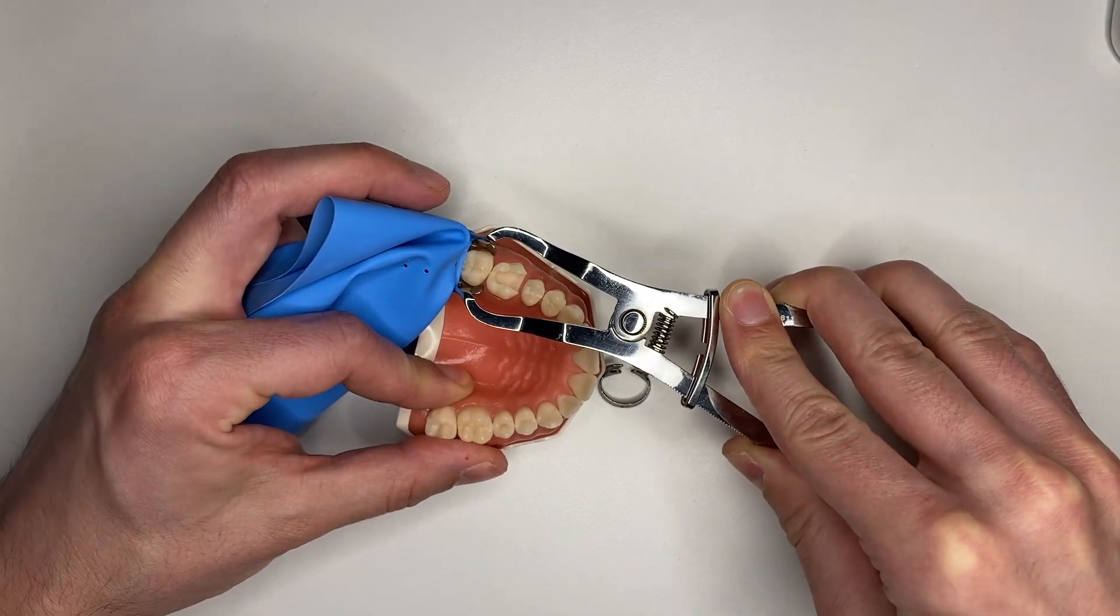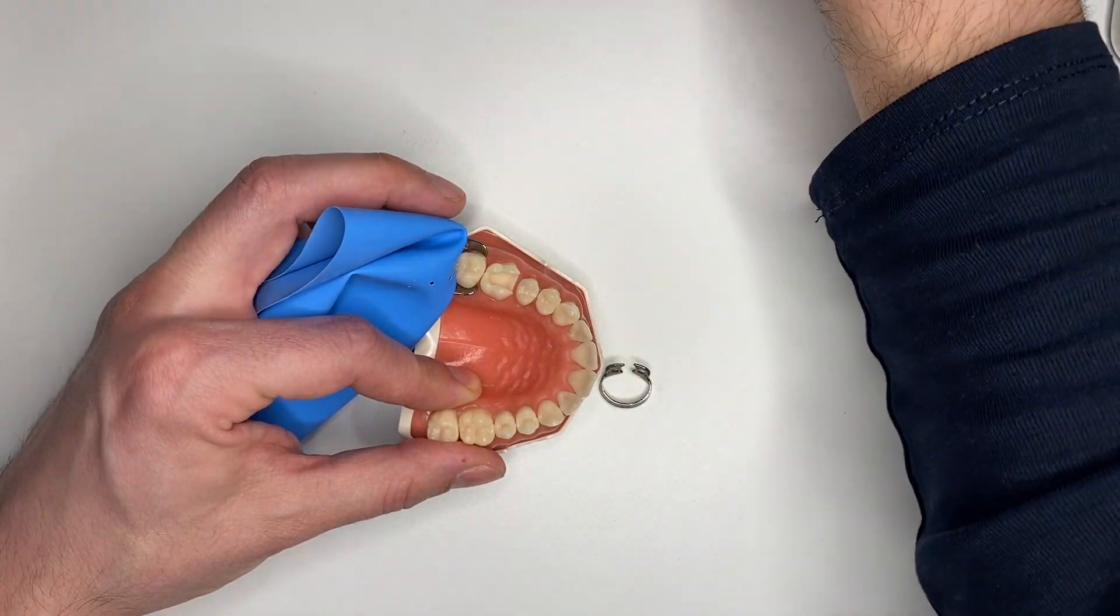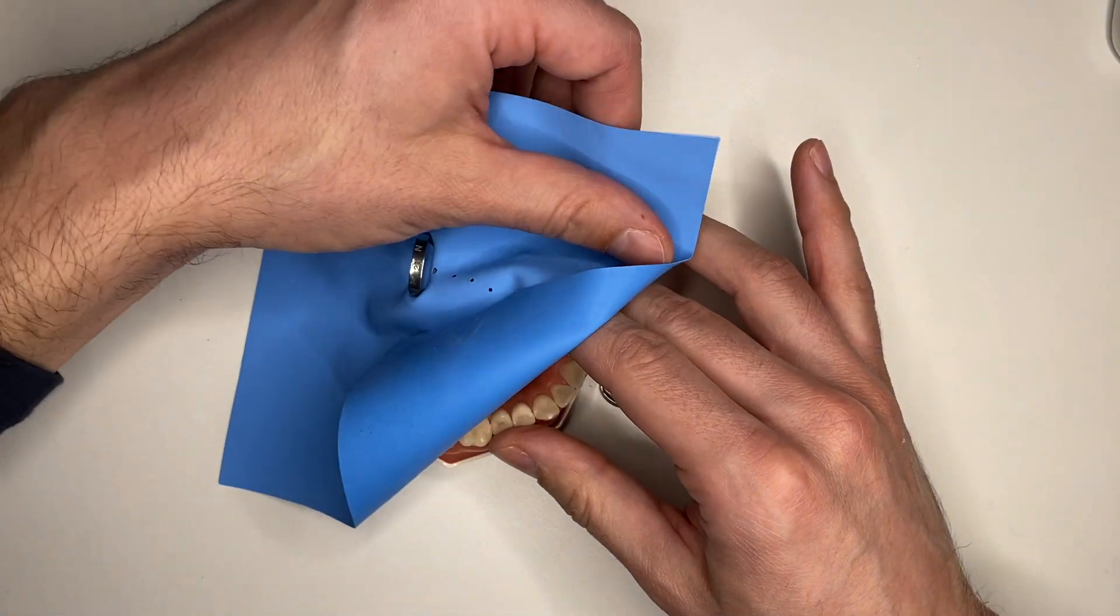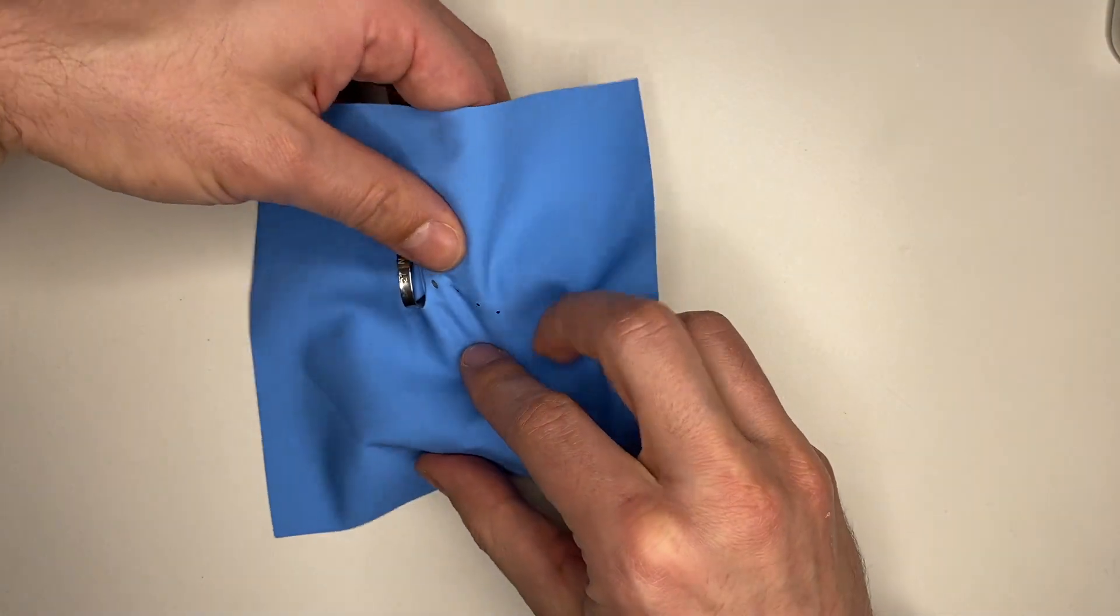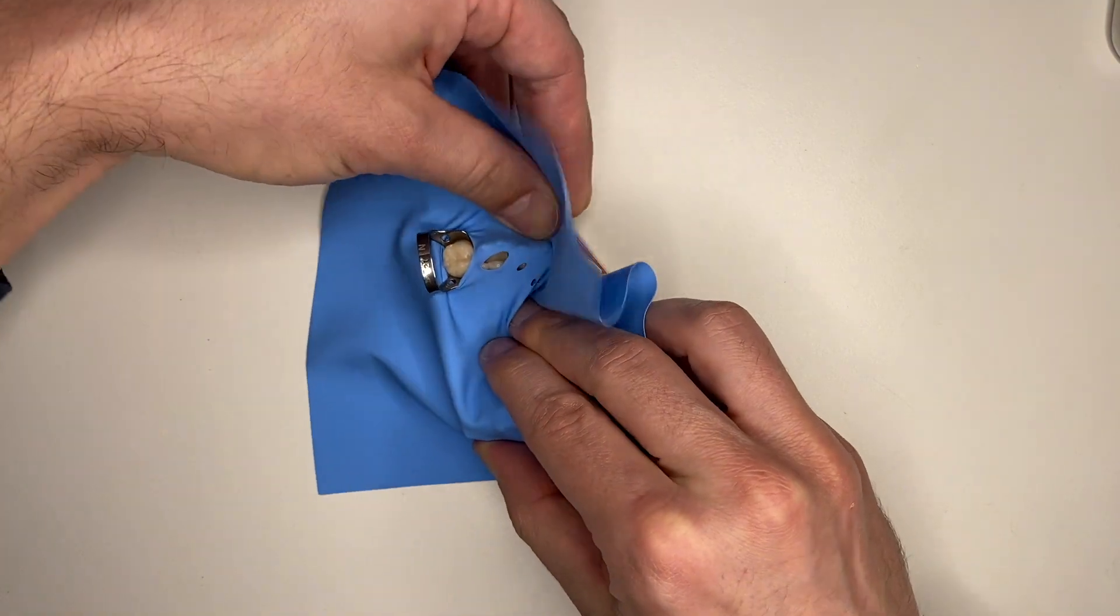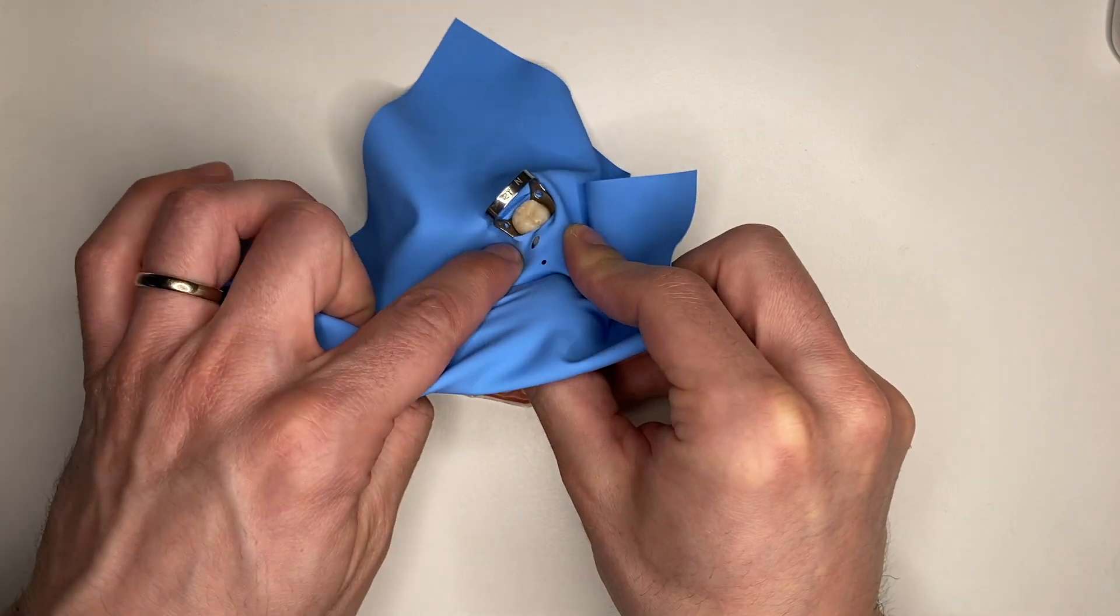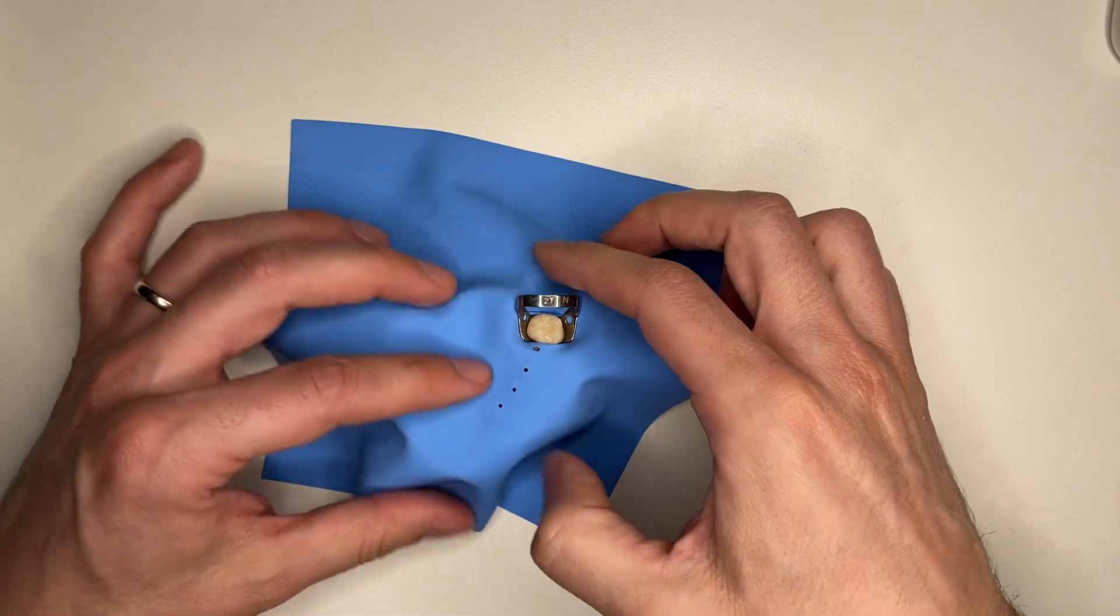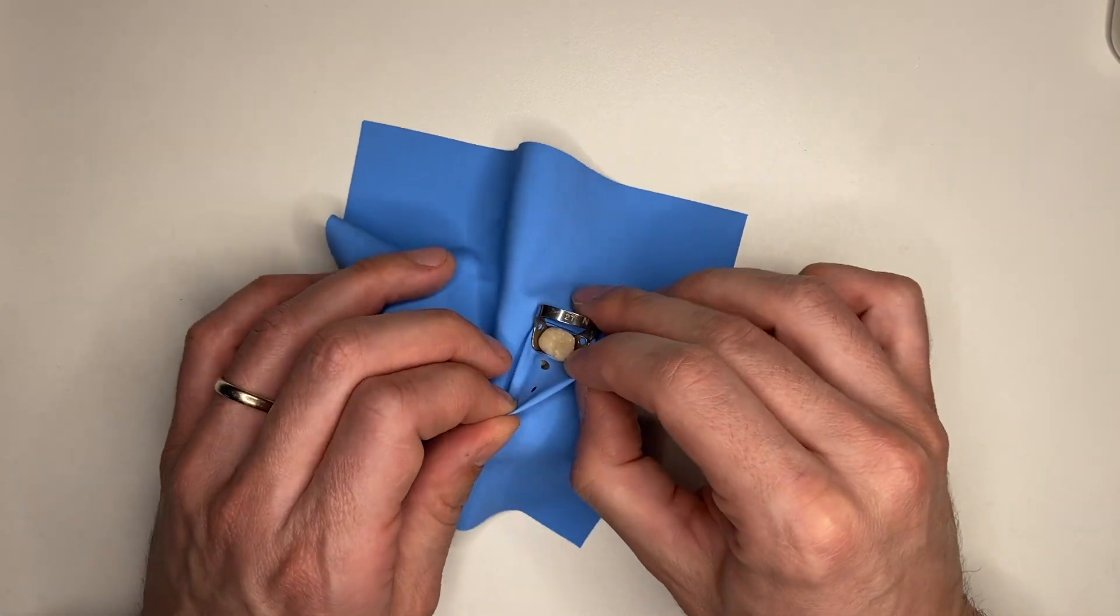We are going to go to our second molar like this and allow the clamp to bite, then remove the pliers from the clamp. Now what you want to do first is to take the rubber dam over the rubber dam clamp. Don't mind anything else, just take the rubber dam over the rubber dam clamp like this. This is your first step towards isolation.